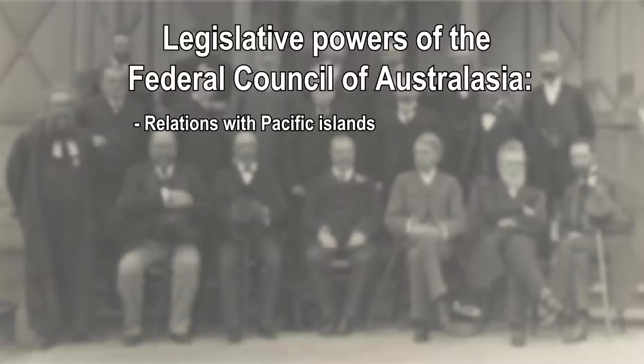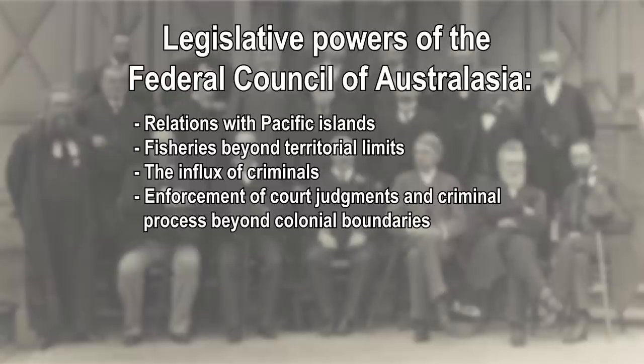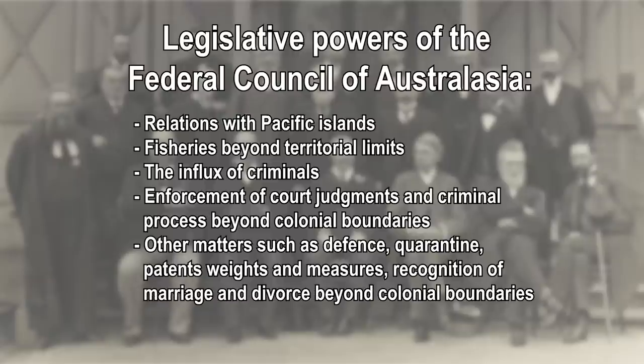South Australia briefly was part of it between 1888 and 1890. New South Wales and New Zealand never joined. The Federal Council of Australasia had some limited legislative powers over things like relationships with Pacific Islands, fisheries beyond territorial limits, the influx of criminals, enforcement of court judgments, criminal processes beyond colonial boundaries, and other matters such as defence, quarantine, patents, weights and measures, recognition of marriage, and divorce beyond colonial boundaries. All these things become elements of the Australian constitution and responsibilities of the federal government — the thing that they were trying to emulate.